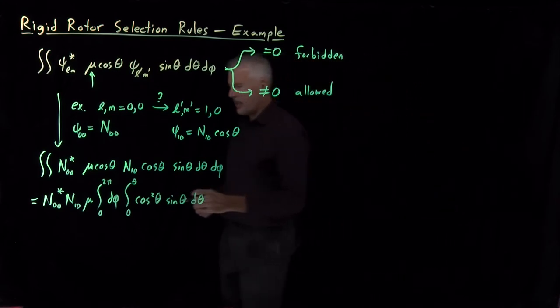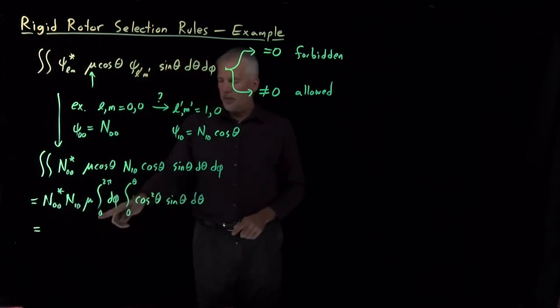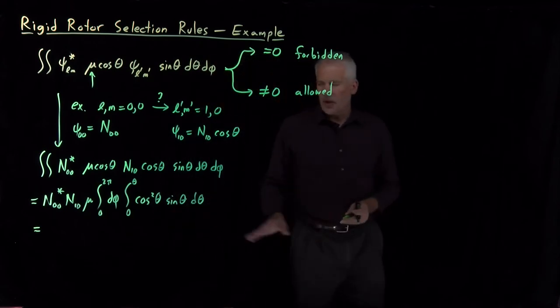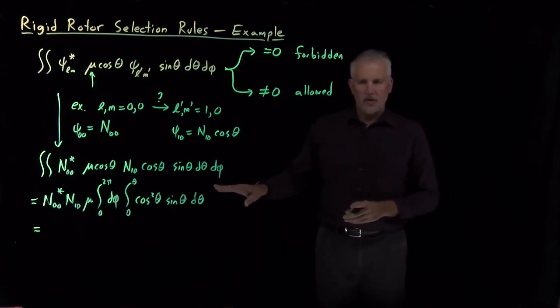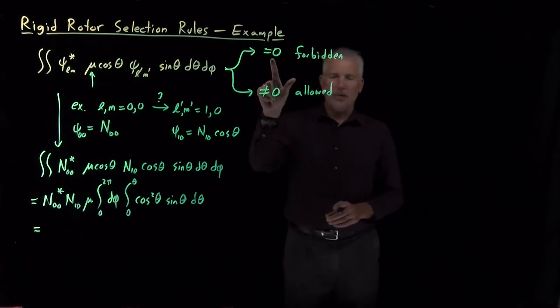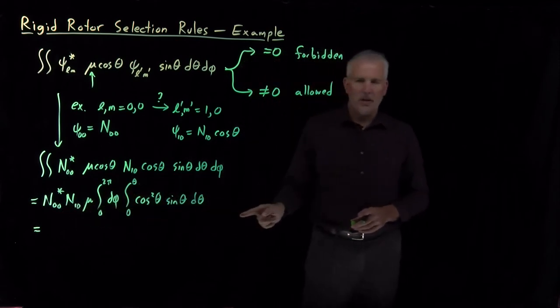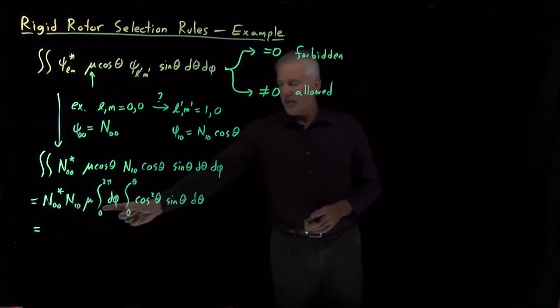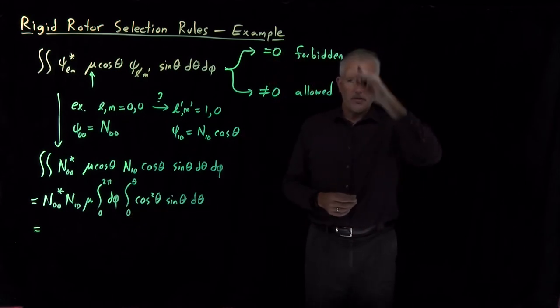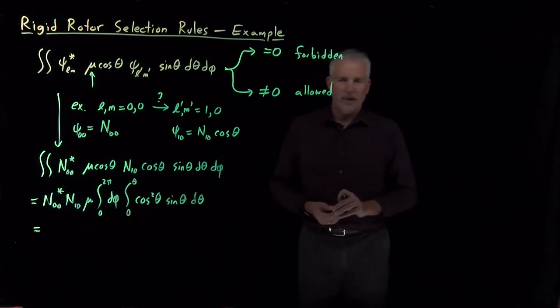And that's not a terribly difficult integral. The integral over d phi from zero to pi, that one's just going to be two pi. But again, keep in mind that we don't care about the number. We don't care whether that phi integral came out to be two pi or pi or three pi. As long as it comes out to be a number that's non-zero, then everything's okay. If any one of the contributions to this transition dipole moment is zero, if this integral is zero or if this integral is zero, that will kill the whole thing and make the transition forbidden. So really all we need to know is whether the integral is going to come out to be equal to zero or not.